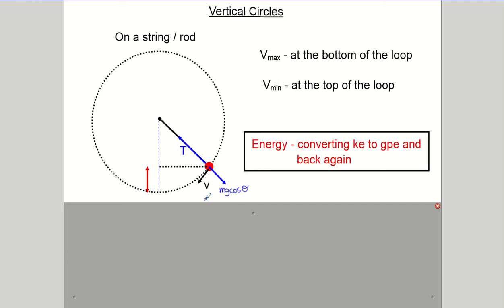In the bottom half of the circle, tension is acting up and mg cos theta is acting down. When you get into the top half of the circle, tension will be acting down and so will the weight component, but the nature of the algebra will take care of that. Because the height is changing, that impacts our GPE, so we measure the height change. We always measure the angle to the downward vertical, so theta goes in there. If the string length is l, it's the same as the radius, so l equals r.